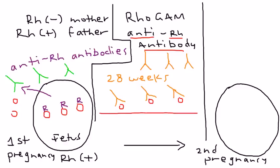If you don't give RhoGAM, what happens is even before the second pregnancy, the woman will develop her own anti-Rh antibodies. These linger, circulate in the system, and remain in her system until the second pregnancy.